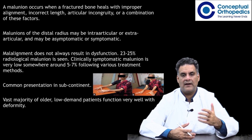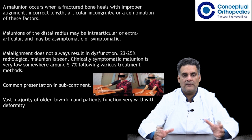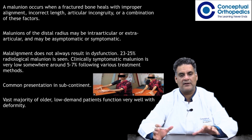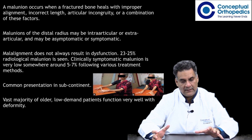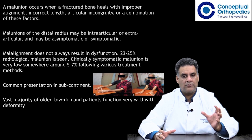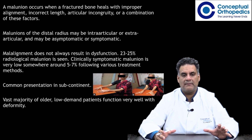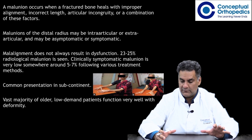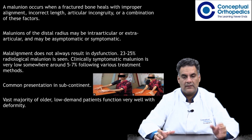When alignment is not maintained, it is called malunion. Malunion may involve incorrect length, articular incongruity, angulation, or a combination. Malunion of the distal radius may be intra-articular or extra-articular, and may be symptomatic or asymptomatic. About 25% of radiological malunions are seen clinically, and symptomatic malunion is only 5 to 7% following various treatment methods.